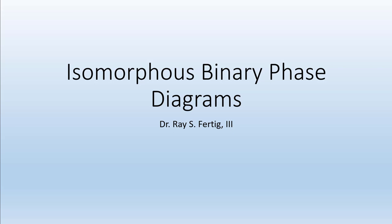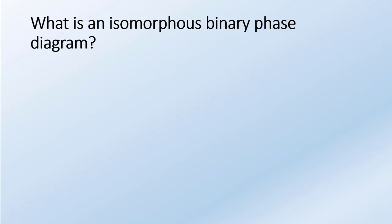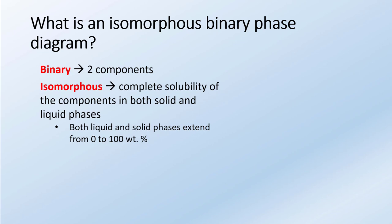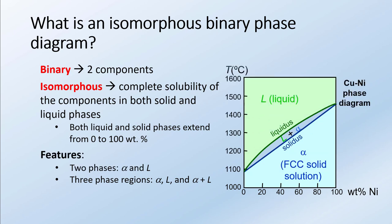Now that we've gone through some basics of phase diagrams, I want to move to something a little bit more complicated. I want to talk about isomorphous binary phase diagrams. The binary tells us that there are two components. The word isomorphous tells us that there's complete solubility of the components in both the solid and the liquid phases. What that really means is that the solid and liquid phases extend from 0 to 100 weight percent.